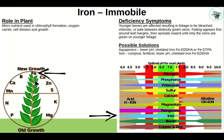Iron is an immobile micronutrient, so it shows up in new growth first. It's used in chlorophyll formation, as an oxygen carrier, and in cell division and growth. Young leaves are affected, resulting in foliage being bleached, chlorotic, or pale between distinctively green veins. Fading appears first around the leaf margins and then spreads inward until only the veins are green — quite distinctive when you see it. In aquaponics: lower the pH, use chelated iron (EDDHA or EDTPA). In soil: compost, fertilizer, lower the pH, chelated iron EDDHA. Note: burying rusty nails will not make iron available.